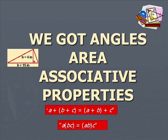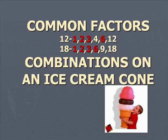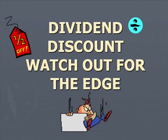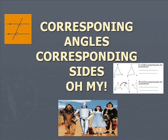We got angles, area, associative property, algebra, bar graph, Celsius, clustering, common factors, combinations on an ice cream cone, coordinates, cylinders, cross products, difference, dividend, discount — watch it for the edge — corresponding angles, corresponding sides. Oh my.